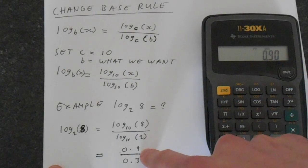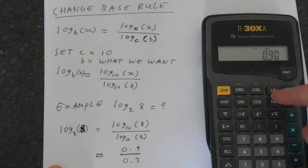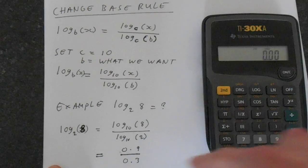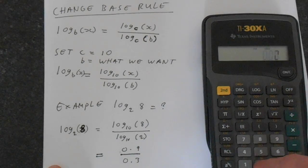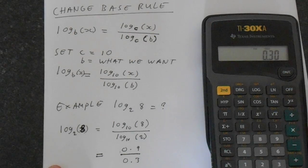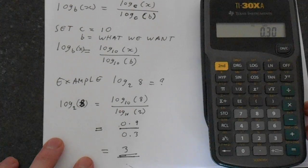So write 0.9 down, do this in two steps, otherwise you'll get confused. And then if we do 2 and then log, this gives us 0.3. So we're getting 0.9 divided by 0.3, which is obviously 3.